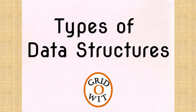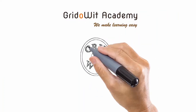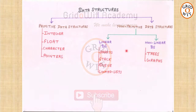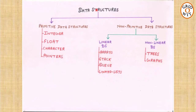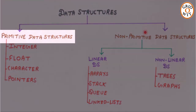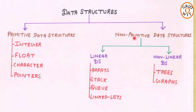Hello friends, in this lecture we will see what are the types of data structures. Mainly, data structures are divided into two parts: primitive data structures and non-primitive data structures.